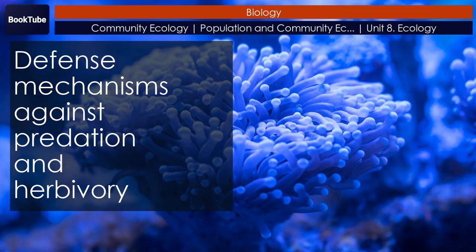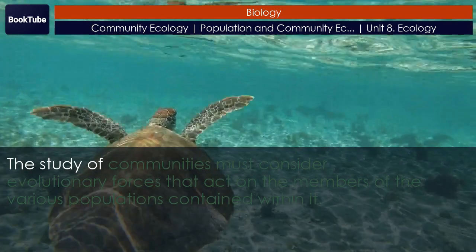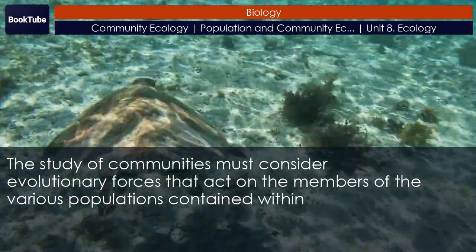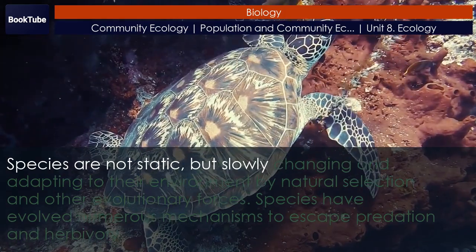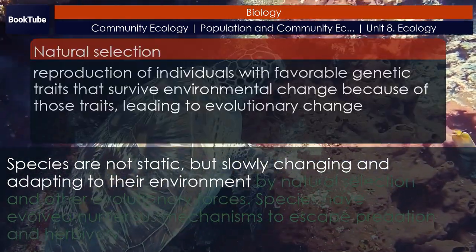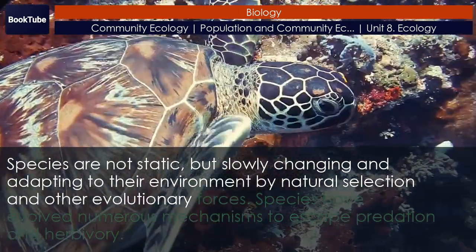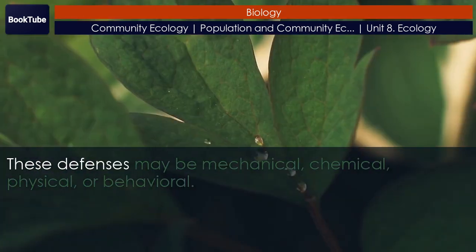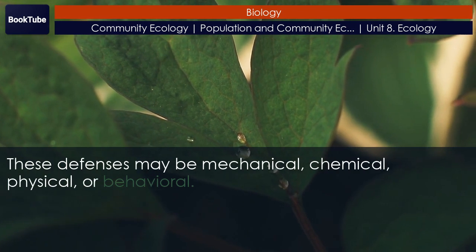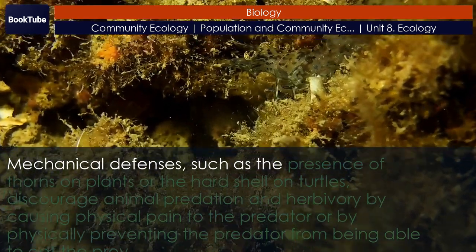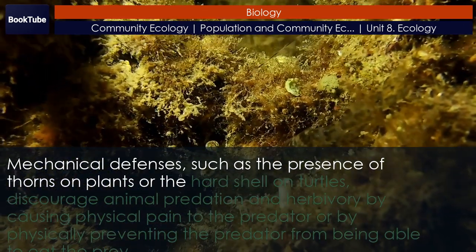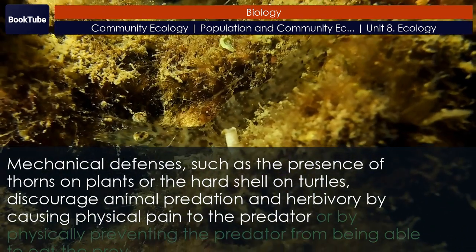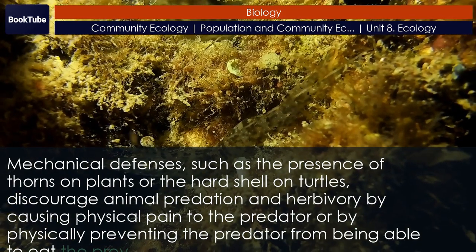Defense mechanisms against predation and herbivory. The study of communities must consider evolutionary forces acting on the members of various populations. Species are not static, but slowly changing and adapting to their environment by natural selection and other evolutionary forces. Species have evolved numerous mechanisms to escape predation and herbivory. These defenses may be mechanical, chemical, physical, or behavioral. Mechanical defenses, such as the presence of thorns on plants or the hard shell on turtles, discourage animal predation and herbivory by causing physical pain to the predator or physically preventing the predator from being able to eat the prey.